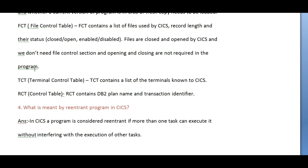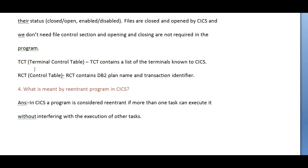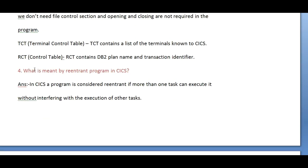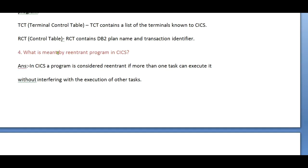Another table is TCT, Terminal Control Table — it contains a list of terminals known to CICS. And RCT, Record Control Table — the Record Control Table contains the DB2 plan name and transaction identifier.